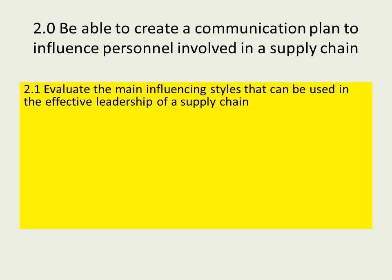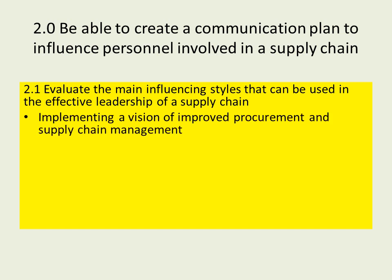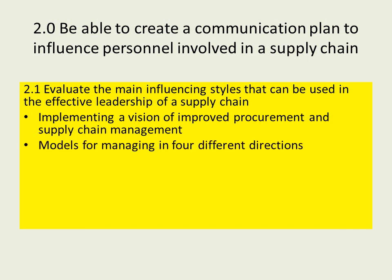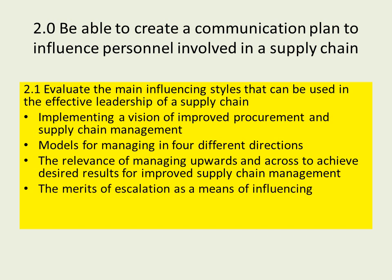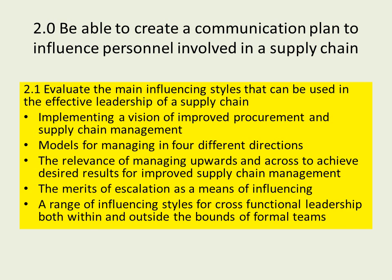The specific unit content for 2.1 includes: evaluate the main influencing styles that can be used in the effective leadership of a supply chain; implementing a vision; models for managing in four directions; relevance of managing upwards and across; merits of escalation as a means of influencing; and a range of influencing styles for cross-functional leadership both within and outside the bounds of formal teams.